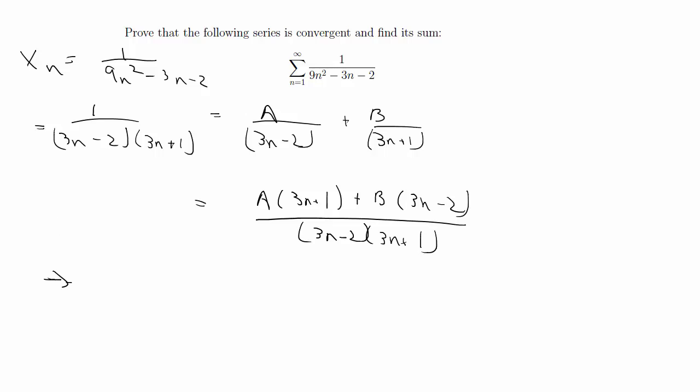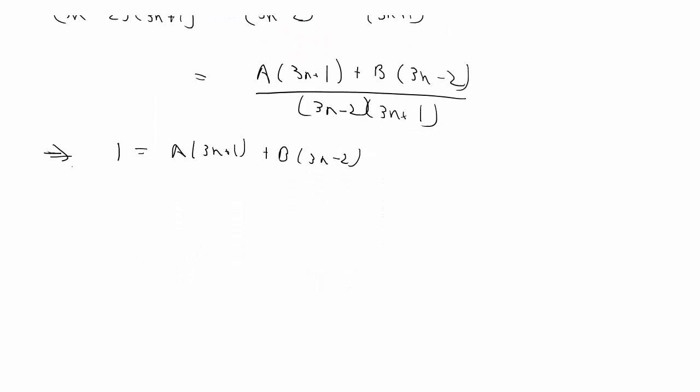Then you can just worry about the numerator, so that's going to give you 1 equals A times (3n plus 1) plus B times (3n minus 2). You want to find A and B by plugging in terms of n that will cancel out A and then cancel out B.